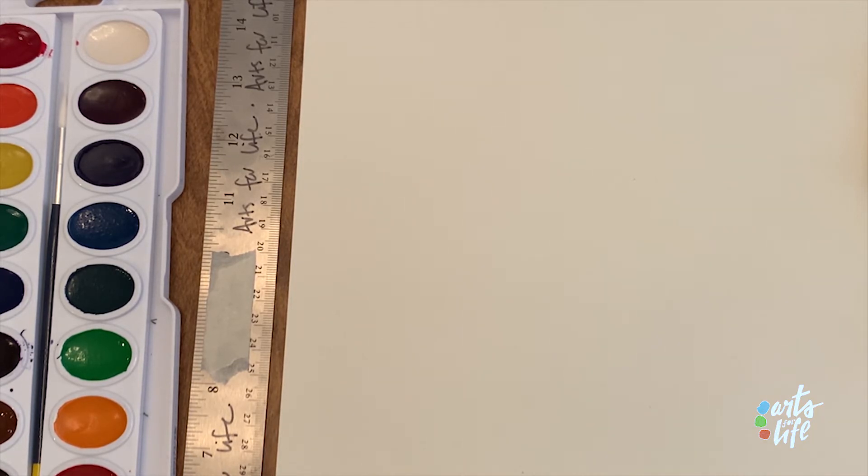Now normally I would use a pencil in case I need to erase any lines. But so y'all can see my paper better, I'm going to go ahead and start with my permanent black marker just so you can see my lines. But normally I would use pencil and then trace over my pencil lines with my black permanent marker.